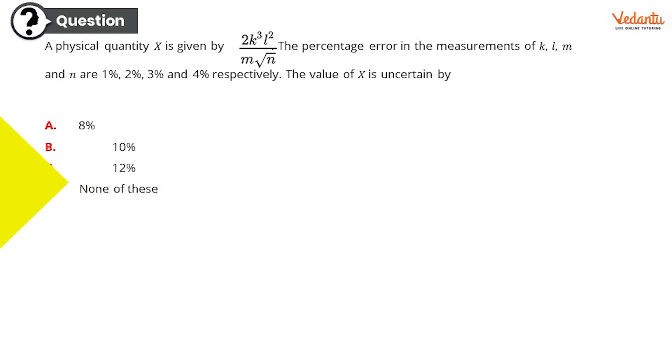So as I said, do not lose confidence at all, be completely confident because the rest of the questions might be yours. Question number six: a physical quantity X is given by 2K³L² / (m√n). The percentage error in the measurements of K, L, M, and N are 1%, 2%, 3%, and 4% respectively.